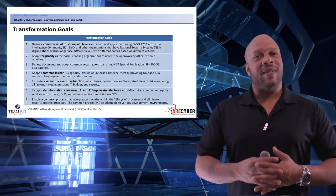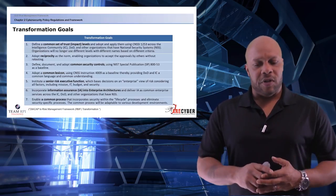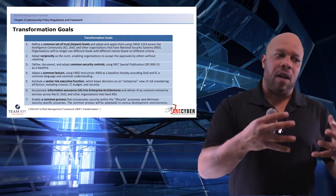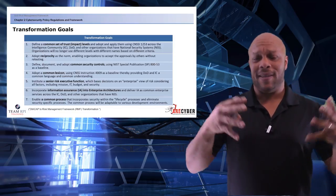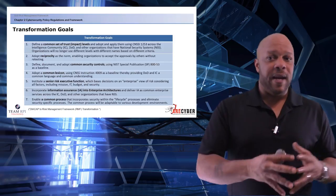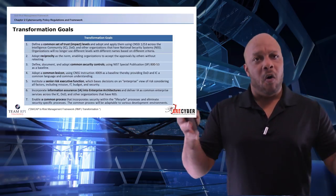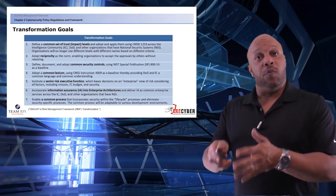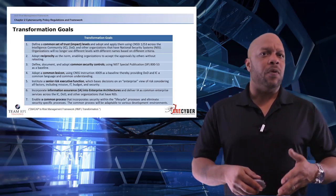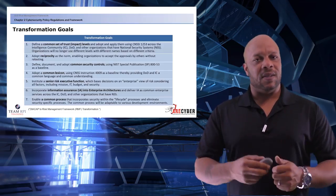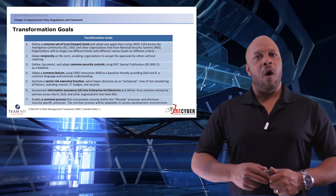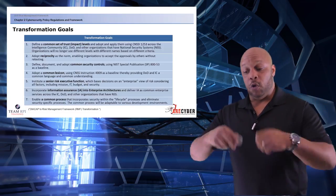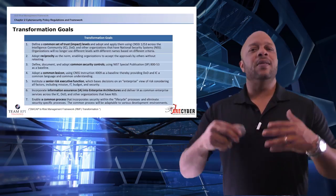To institute a senior risk executive function — it's important to understand that this is a function. It takes the whole family: intelligence, your classic six element whether it's G6, N6, or S6, the two, three, four, and eight — the whole family. Everyone that has a security function must be an integral stakeholder in the risk management framework. Next, to enable a common process — consistency. The easiest, strongest systems are ones that are predictable. With a predictable baseline, you have a predictable outcome. Being able to manage the system throughout its entire lifecycle is paramount.